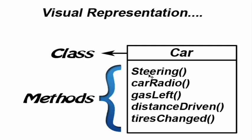And the gas left is how much gas is left in the car, and the distance driven, how much distance has been driven by the car, and the tires changed if the tires have been changed on the car. So basically that gives you a little idea of what classes and methods are and how they're organized between each other. The methods are stored inside the classes and they can be called from the classes in your code.